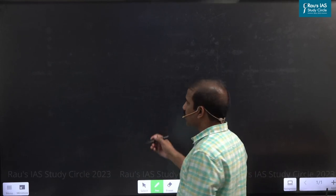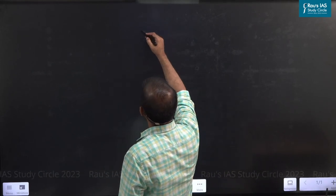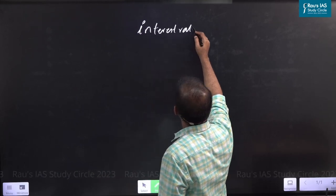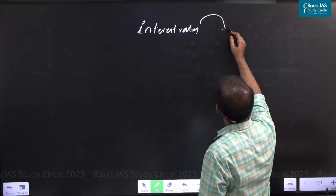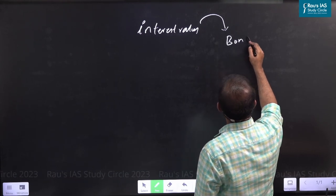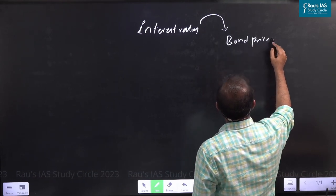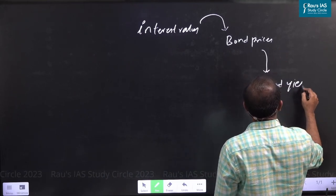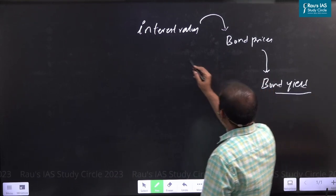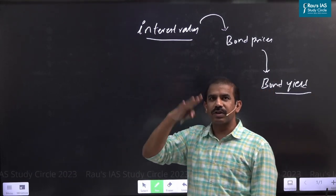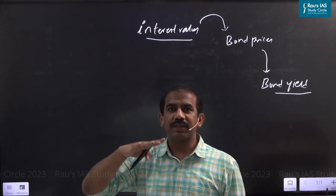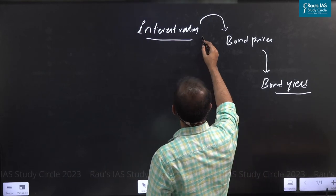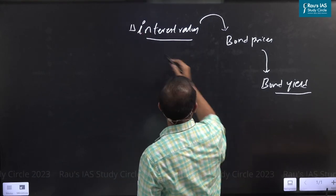Let's try to understand the relation between interest rates in the economy, the current market rates of interest, and how these interest rates in turn affect the bond prices and thereby bond yield. So we're trying to understand how the current market rates of interest would influence the prices of bonds being traded in the market, and in turn how changes in interest rates would affect the change in yield.